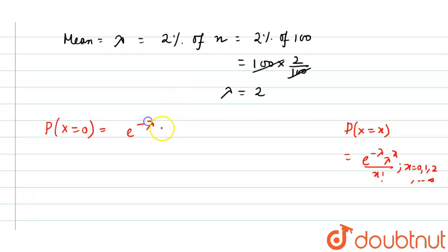So we get e to the power minus lambda, lambda to the power 0 by 0 factorial. So we get e to the power minus 2, lambda to the power 0 equals to 1 divided by 1, that means e to the power minus 2. That is the correct answer.